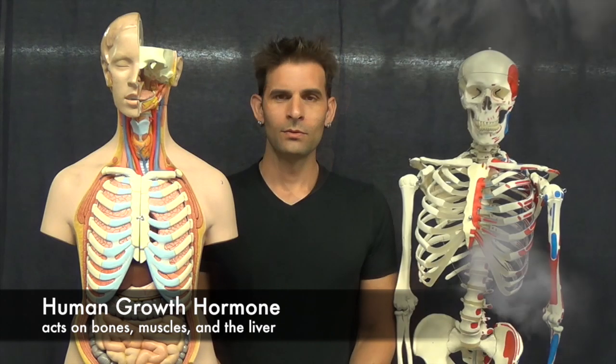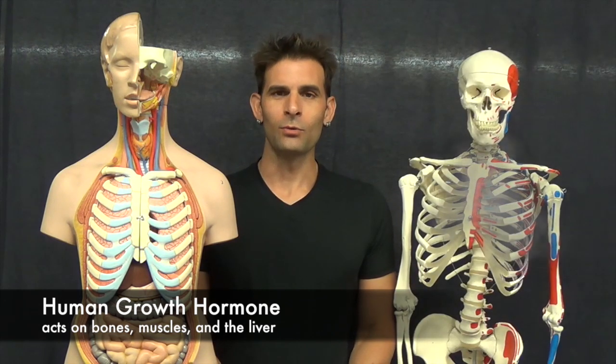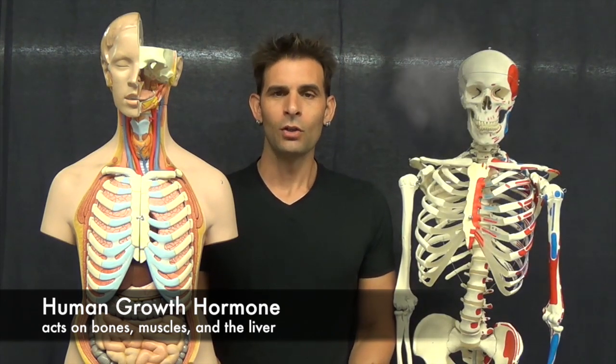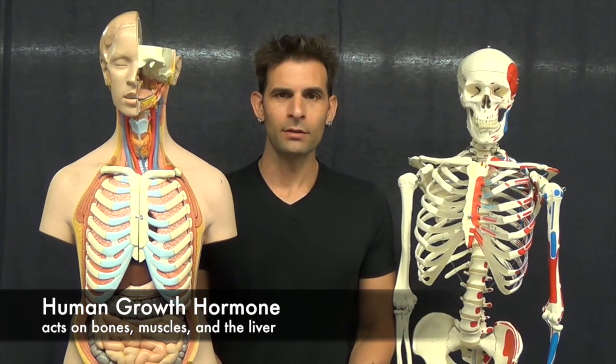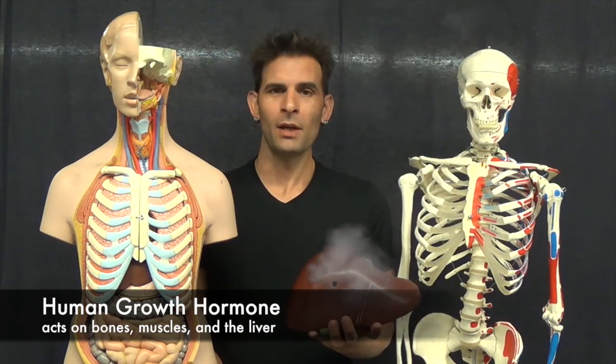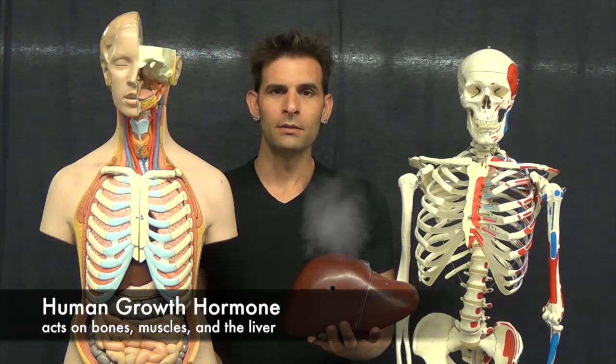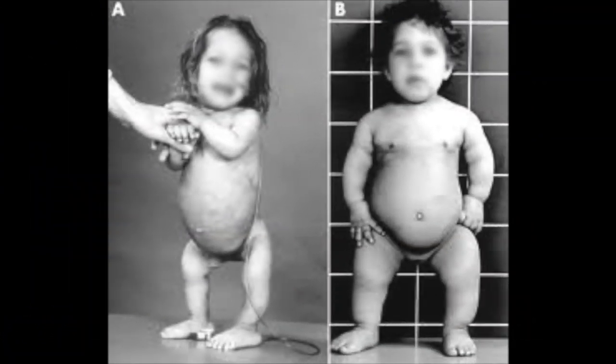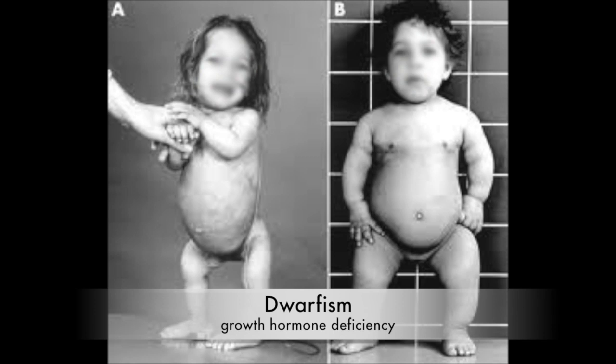Human growth hormone acts on bones to stimulate growth and development, and also acts on the liver to stimulate the basal metabolic rate. Too little secretion — a hyposecretion of growth hormone in a child — results in dwarfism.